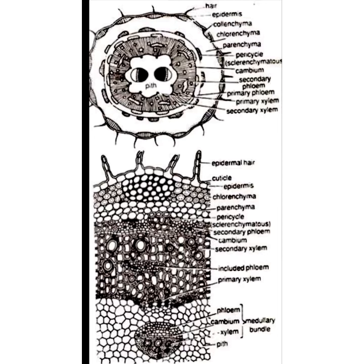Parenchyma cells are thin and transparent. Collenchyma is present only below the ridges — you can see that clearly in the figure — and its breadth and depth varies below different ridges. Chlorenchyma is present inside the collenchyma. The parenchyma of the cortex is located below the collenchyma and chlorenchyma, and is 2 to 3 layers deep with cells containing intercellular spaces.